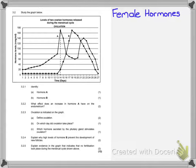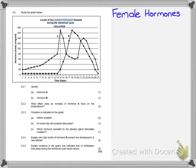We need to look at a really important piece of information about this graph. It says 'levels of two ovarian hormones,' which means we are only talking about estrogen and progesterone. LH and FSH are pituitary hormones, so you won't see them in this graph. Another important detail is the days: hormone A peaks on day 14, whereas hormone B seems to peak on days 17 and 18, and that gives us an indication of which hormone is which.